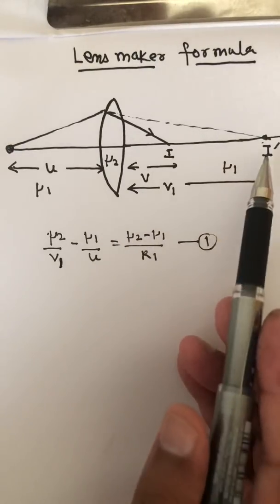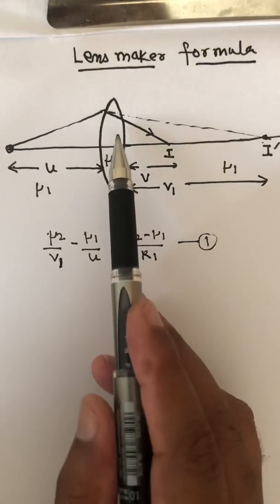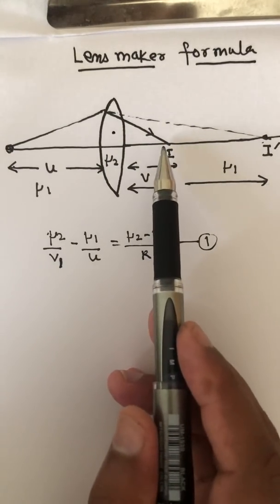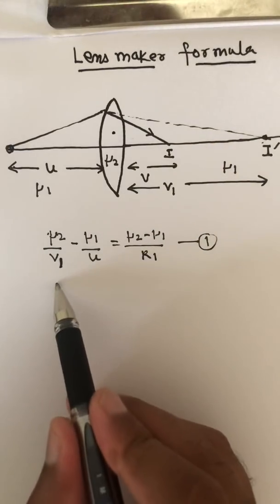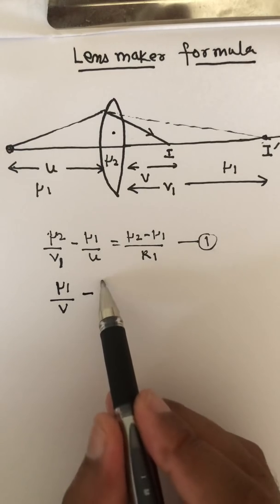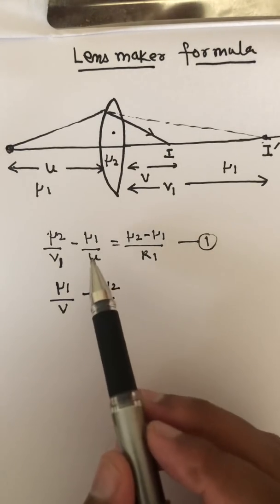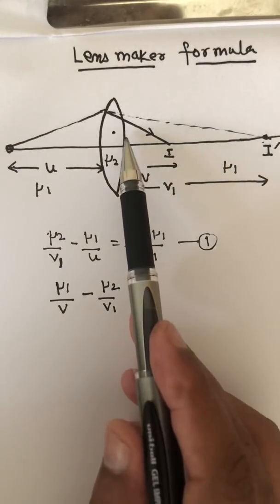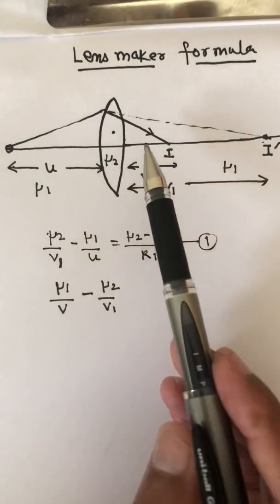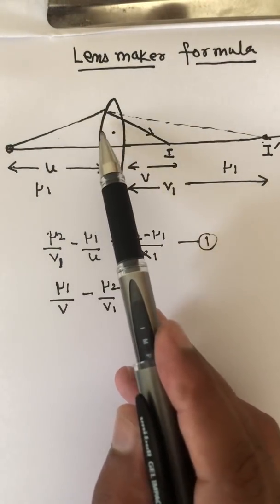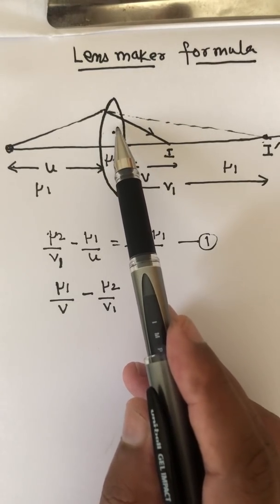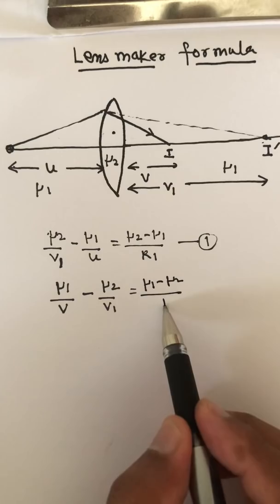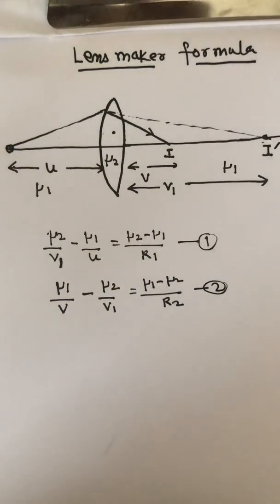Now v1 works as an object for the second surface. For the second surface, light travels from lens to air — denser to rarer — so mu1 and mu2 interchange. We write: mu1/v minus mu2/v1 equals mu1 minus mu2 divided by R2. This is the second equation. The media interchange because light moves from air to lens at the first surface, and from lens to air at the second surface.